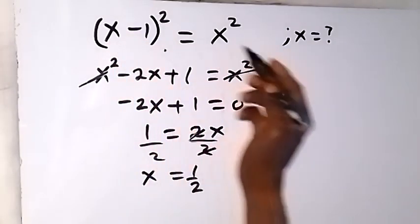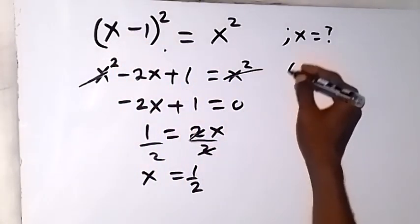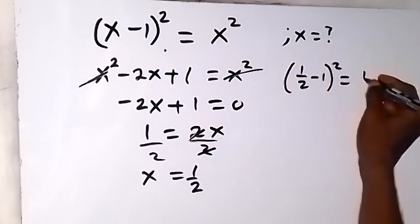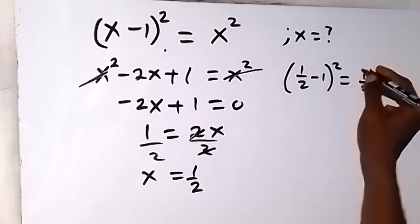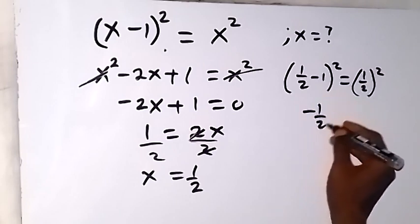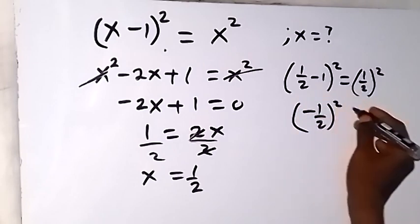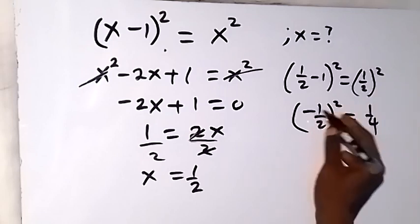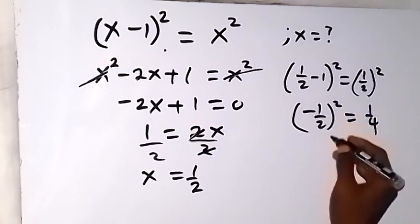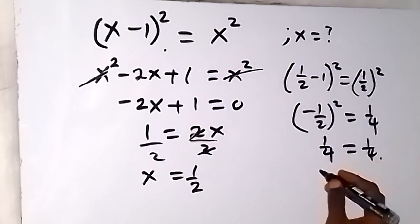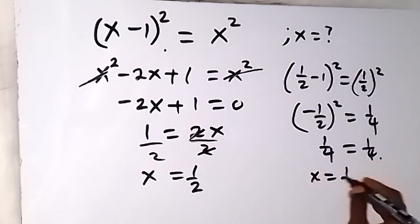When we put half into this equation, we have, in bracket, half minus 1, then squared, equals to half squared. Half squared is 1 over 4. And here, when we square, minus is plus as well. So we also have 1 over 4 here, which is equal to 1 over 4. That means x equals to half is a correct answer.